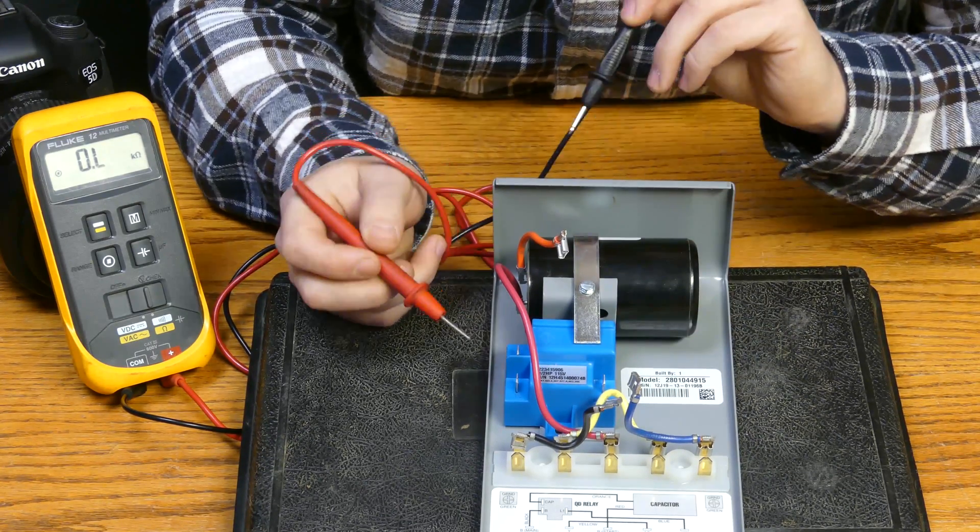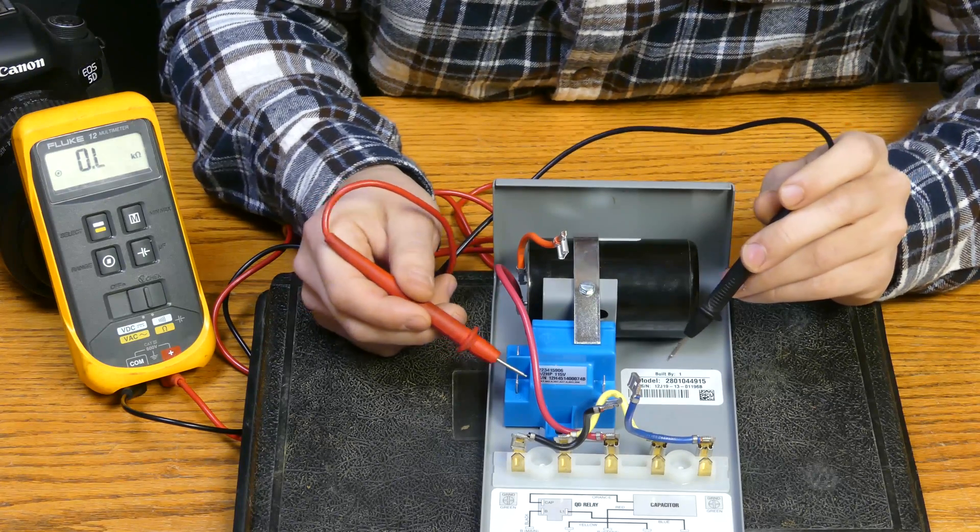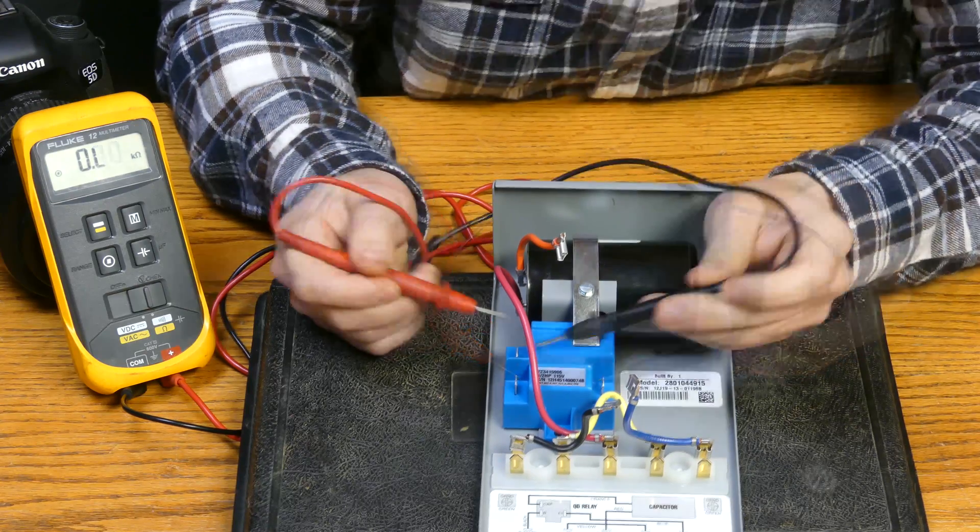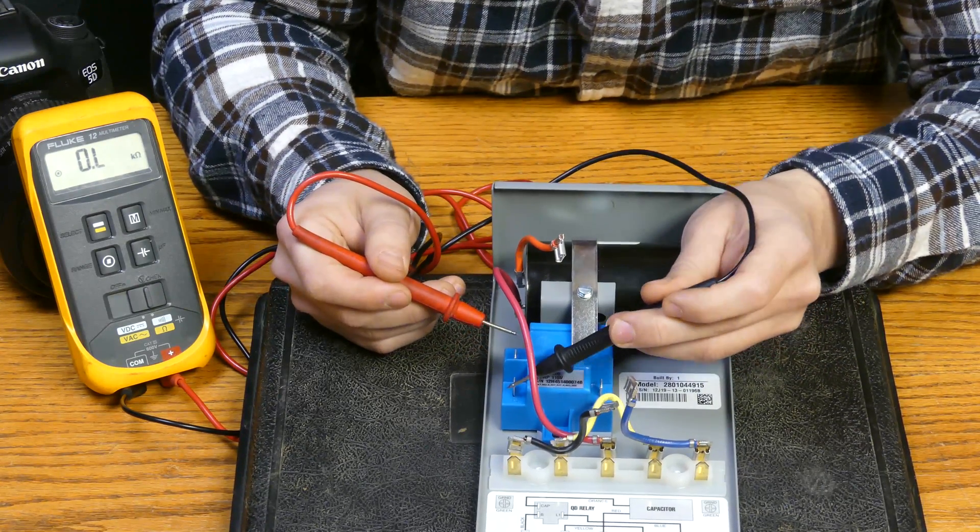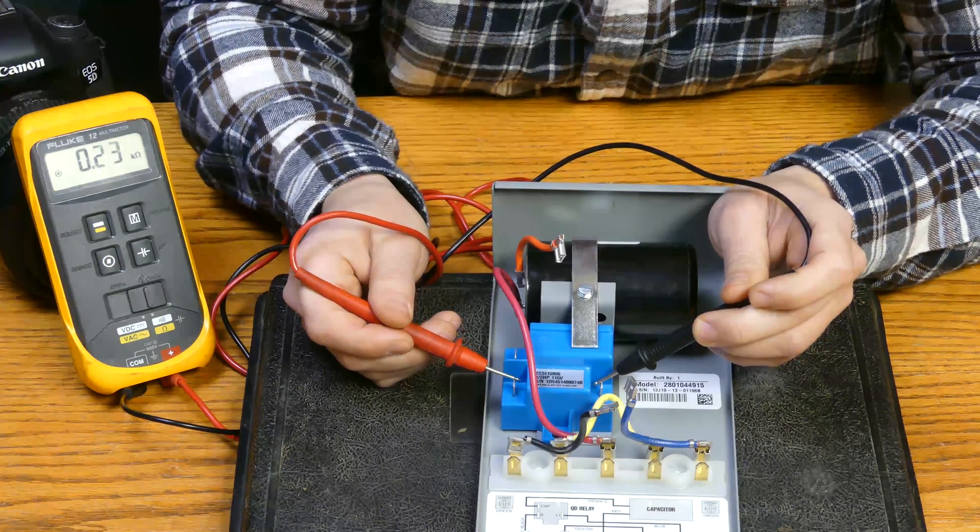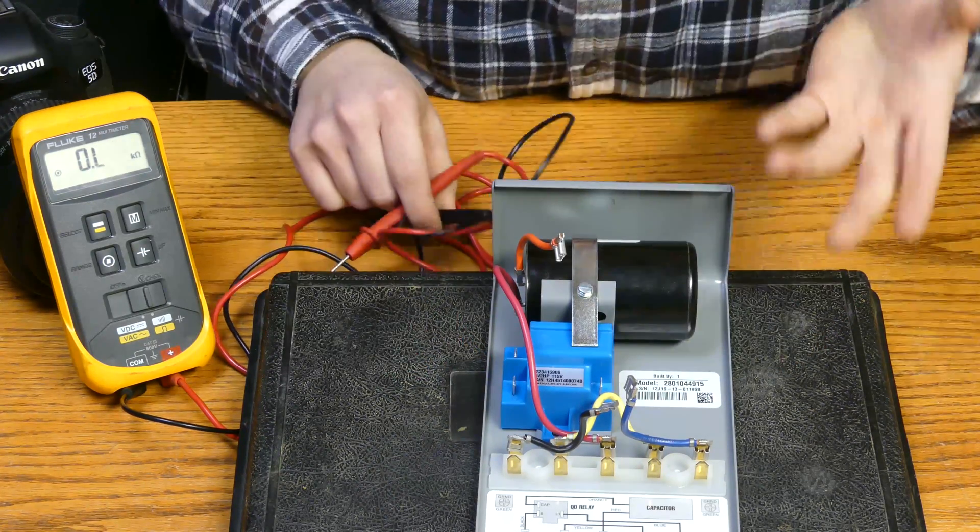Alright, and then the last one we're going to check here is going to be between B here and L1, and we're looking for 0. So just to recap again, nothing between B and cap, and then between B and L1, 0. So that relay is also good.